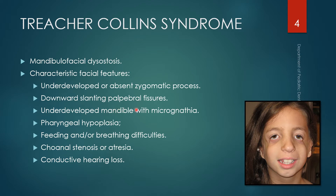In Treacher-Collins syndrome you also have downward slanting palpebral fissures — the eye opening slopes downward towards the outside. There is also an underdeveloped mandible with macrognathia and pharyngeal hypoplasia, causing difficulty in breathing and feeding. Children also have choanal stenosis or atresia, affecting the inner anatomy of the nose, and conductive hearing loss. You should be able to recognize a suspected case and make a proper referral.